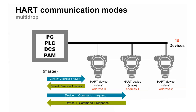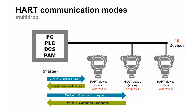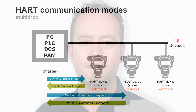In multi-drop mode, the analog signal is not measured — the devices are configured to use a constant loop current, like four milliamps, only for power. All of the data is acquired using HART. This is not a very common application because there's no analog control loop, but it is possible. HART has its roots in the 4 to 20 milliamp world, but the protocol has been adapted to use several different physical layers.